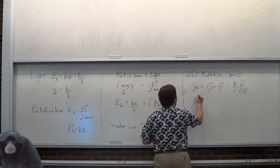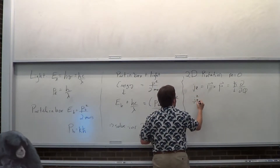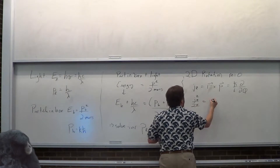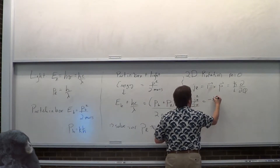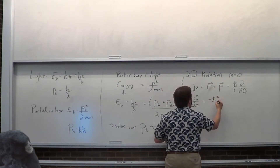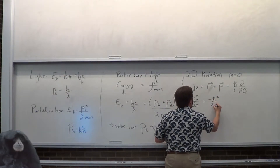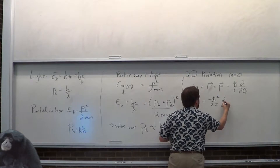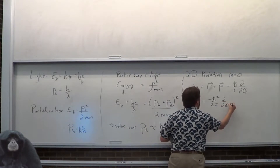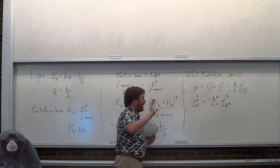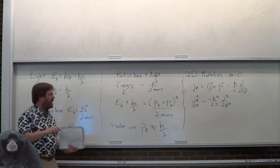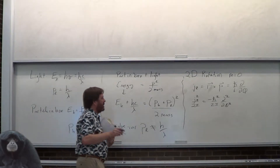Notice that it is nice and consistent — this still ends up being minus hbar squared over 2I double derivative, so the universe works. Everything works out just fine.